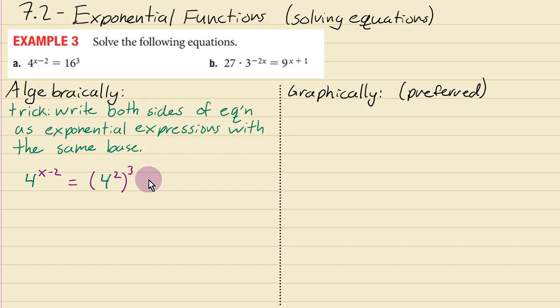But if we then simplify this so it's just written as 4 to the power 6 then we can see that if we have 4 to the x minus 2 power and 4 to the power 6 and the base is both 4 then that means that x minus 2 must be equal to 6 for this equation to work. Then when you add 2 to both sides you just get x equals 8.